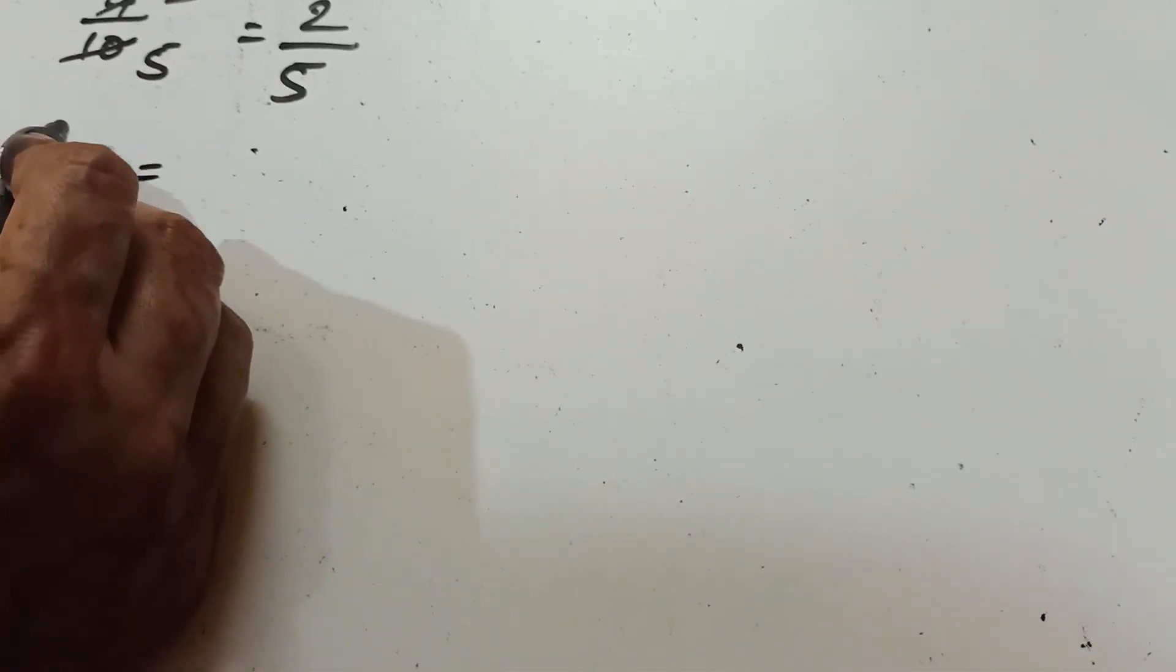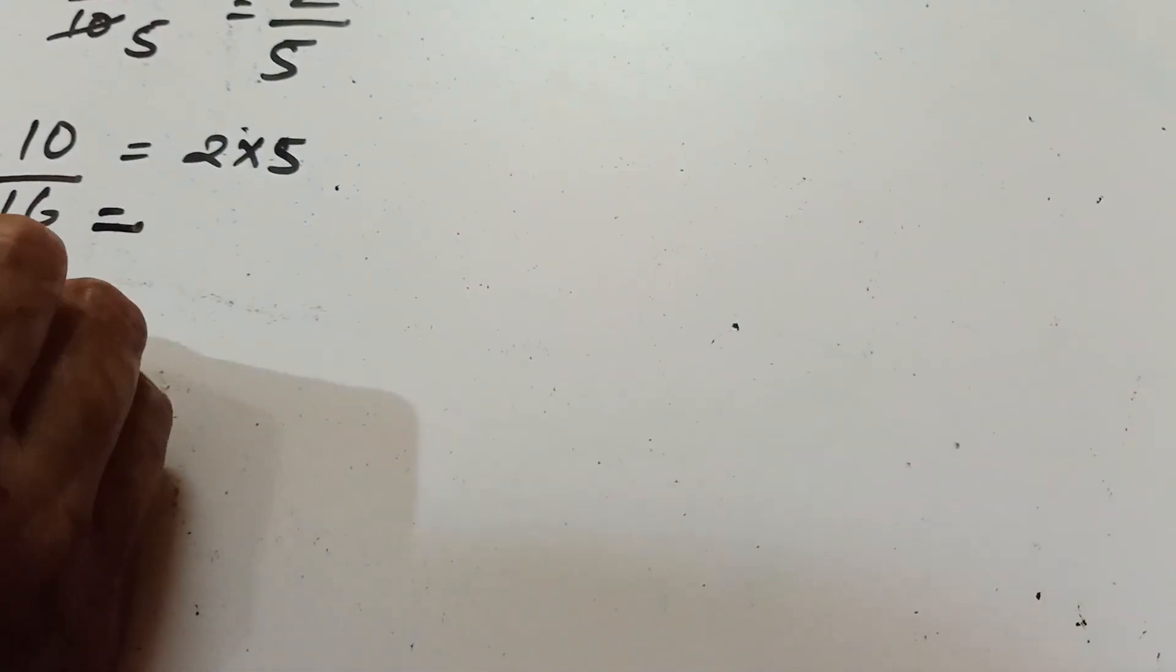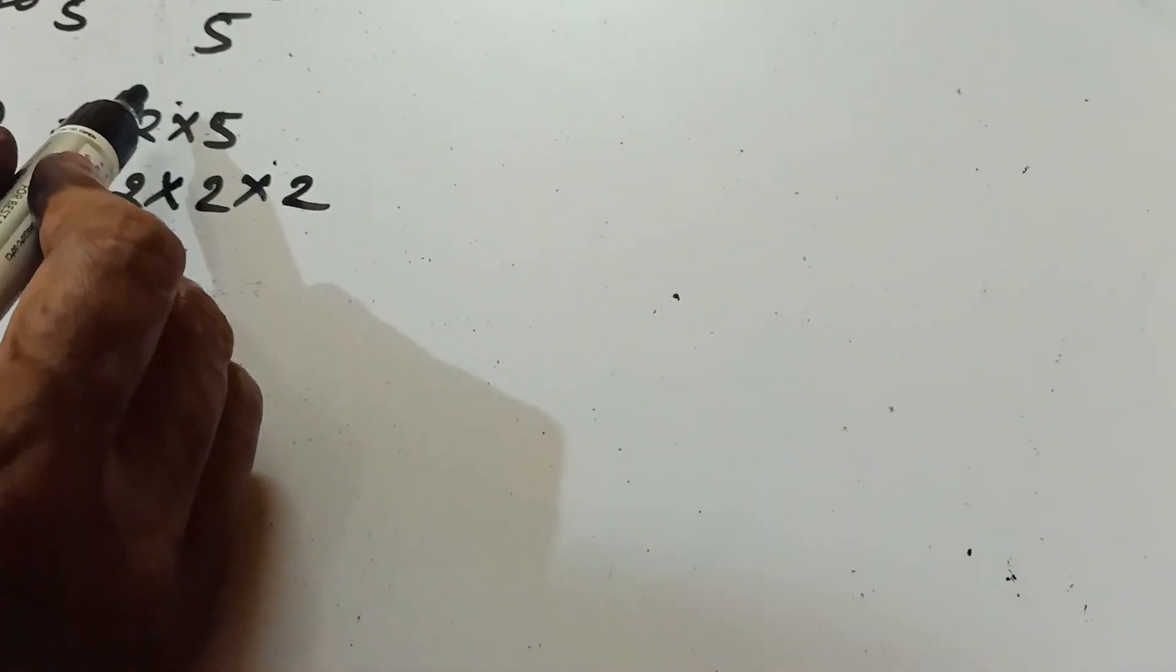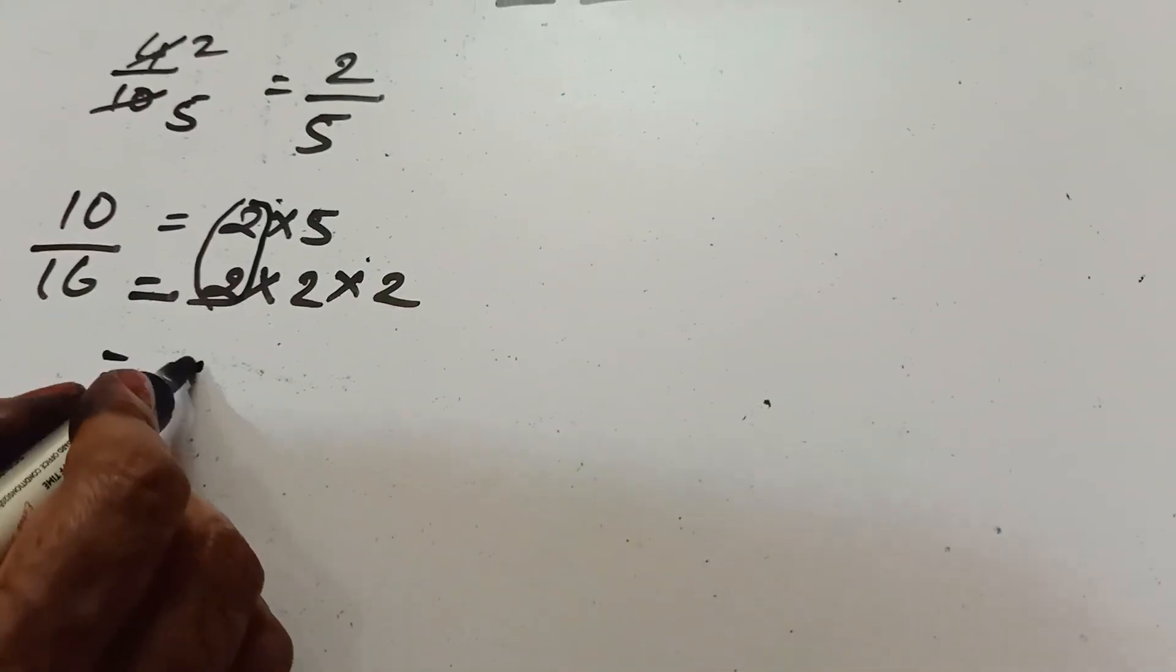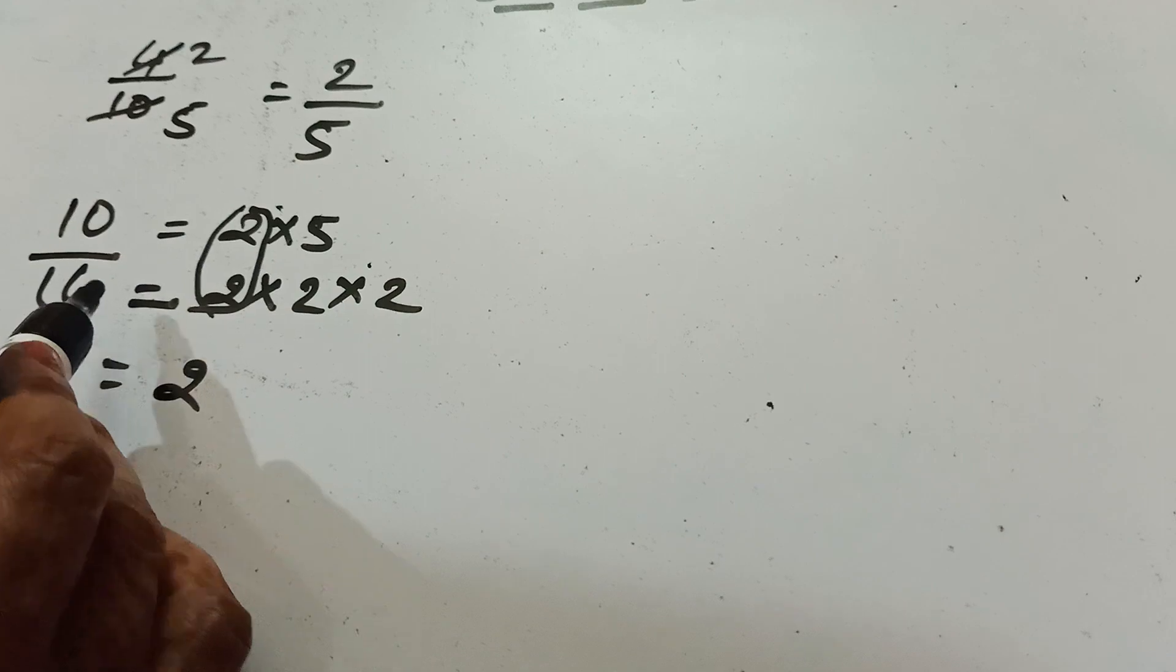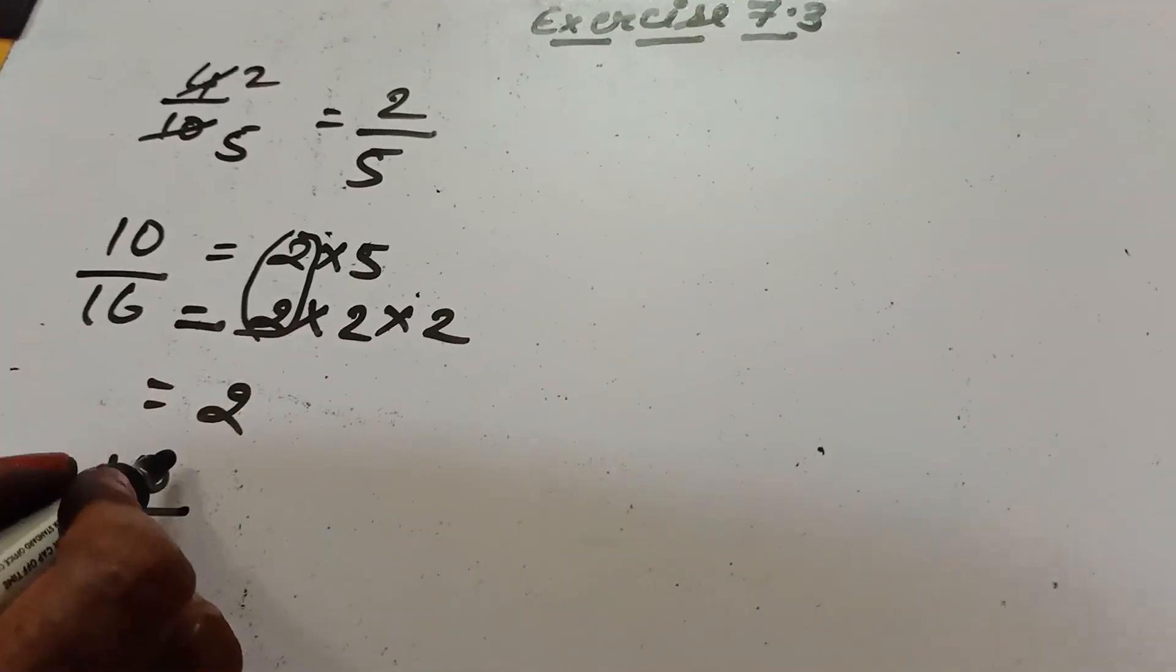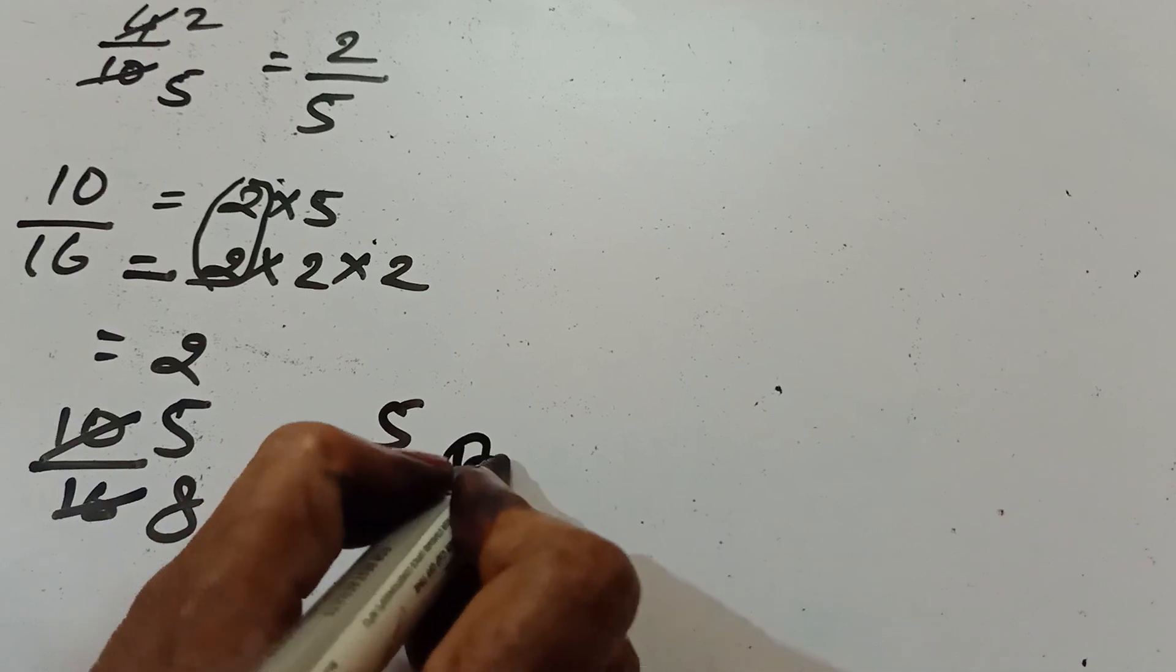I am taking a number 10 by 16. So how can we do this in another method? First we factorize 10, 2 into 5. Then we factorize 16 and it is 2 into 2 into 2. Children see which one is common factor in both. It is 2 and 2 is the common factor of this number and when we 10 by 16 cut from 2, we find 5 by 8 and it is the lowest term of this question.